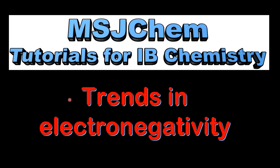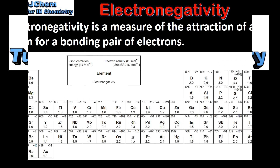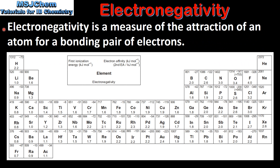This is MSJChem. In this video I'll be looking at trends in electronegativity. Electronegativity is a measure of the attraction of an atom for a bonding pair of electrons. Electronegativity is measured on a relative scale which assigns fluorine a value of 4.0, making it the most electronegative element.